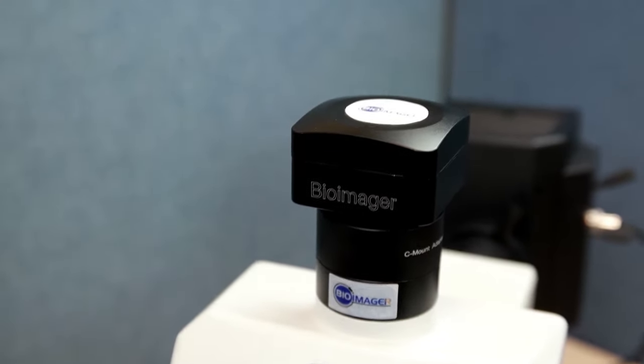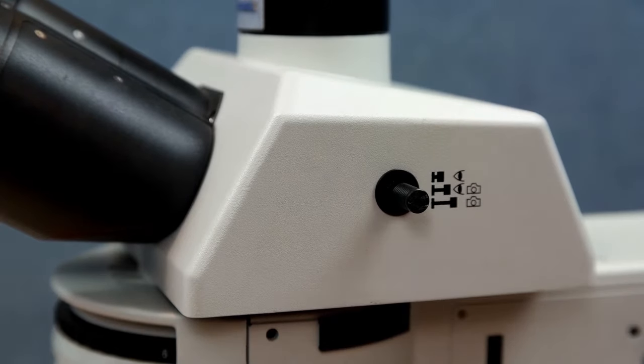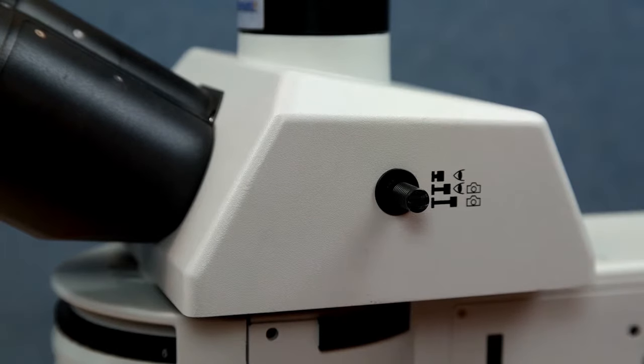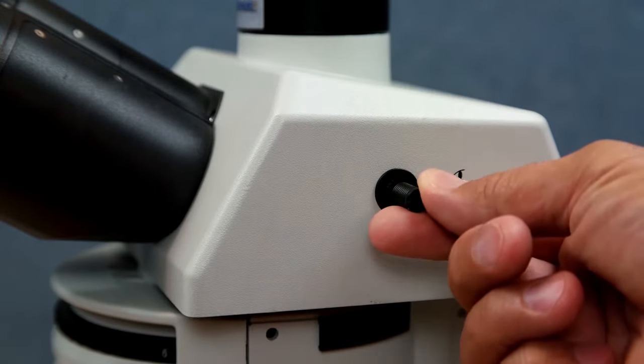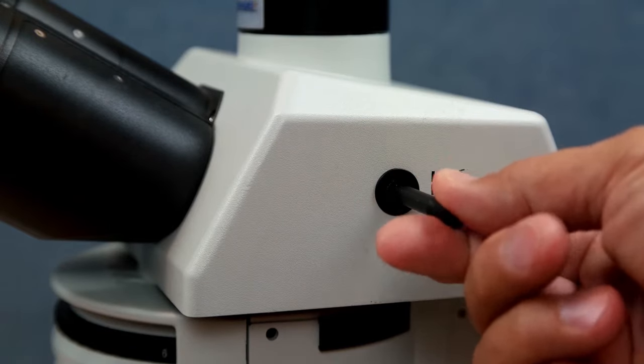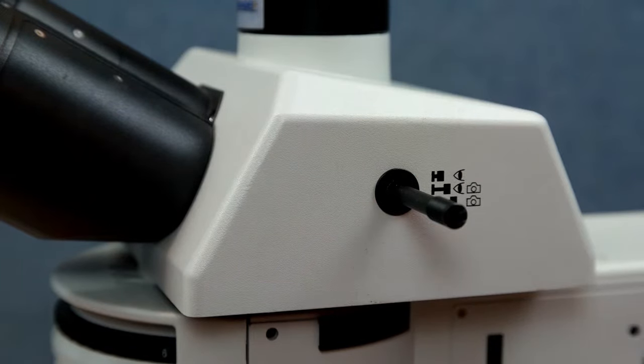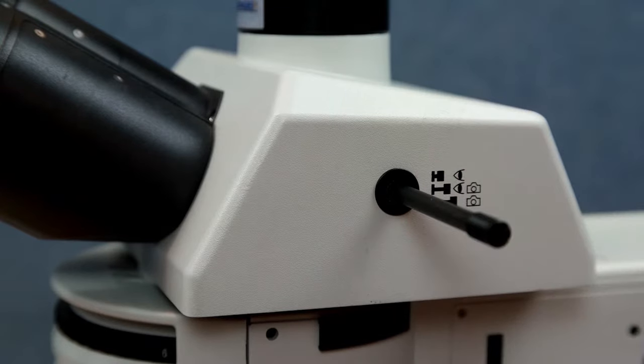The image signal can be split between eyepieces and camera using this lever here. It can be 100% to eyepieces, 50-50, or 80-20 between eyepieces and camera, and also 100% signal all goes to camera.